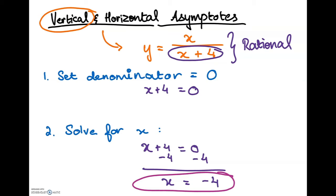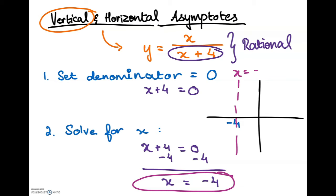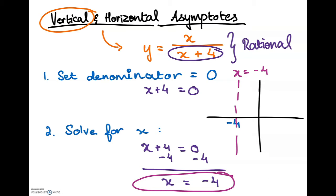To show you how this looks when you draw it on a graph: if this is the point negative 4, then the line x equals negative 4 will be your vertical asymptote. Your graph could technically look like this, or like this, and so on. That's all there is to the vertical asymptote.